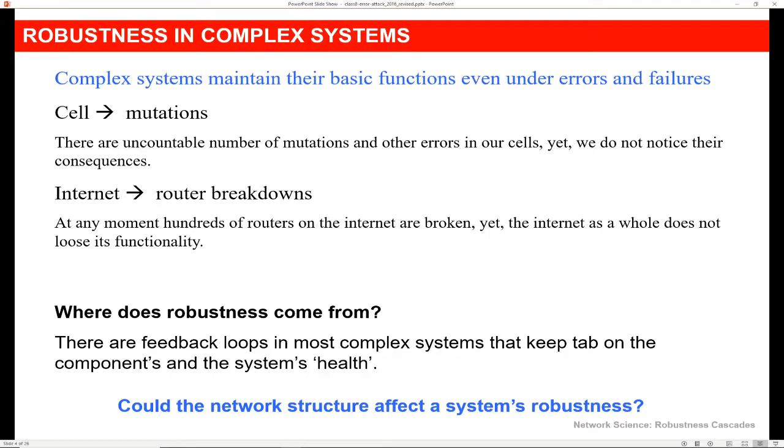And so where does this robustness come from? In most complex systems, we have different kinds of feedback loops that keep tab on the components and the system's health. So we ask ourselves, could network structure affect a system's robustness?